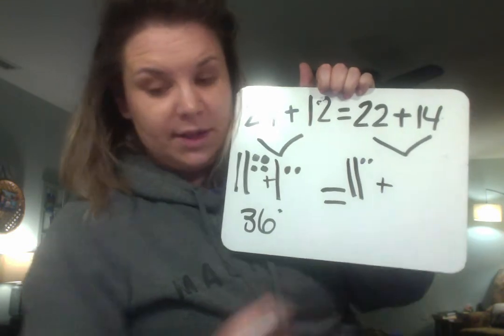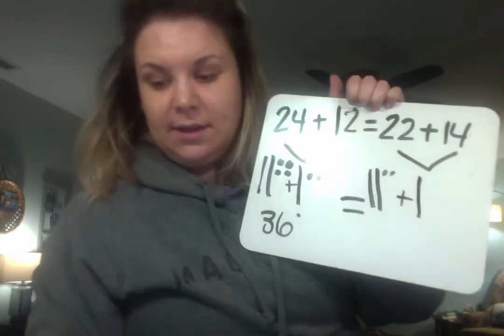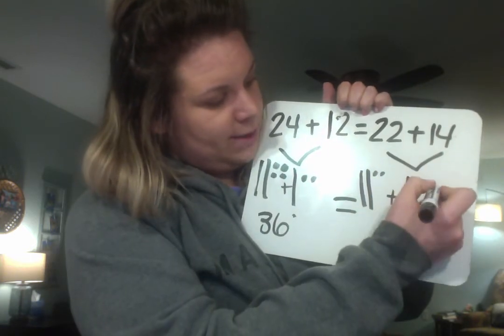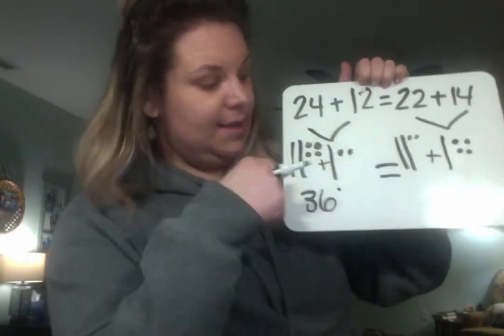Now we need to add our second number. Ten. One in the tens place. And four ones. One, two, three, four. Same thing we did on this side.